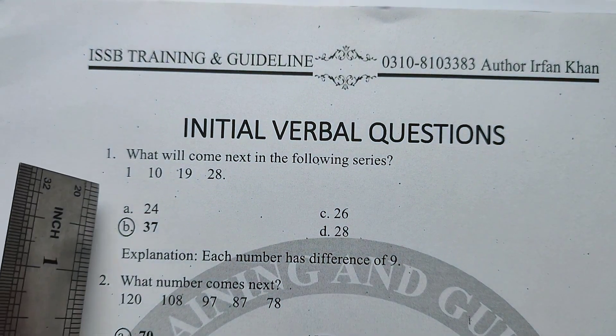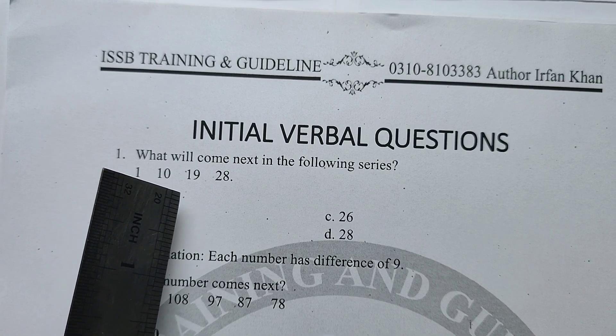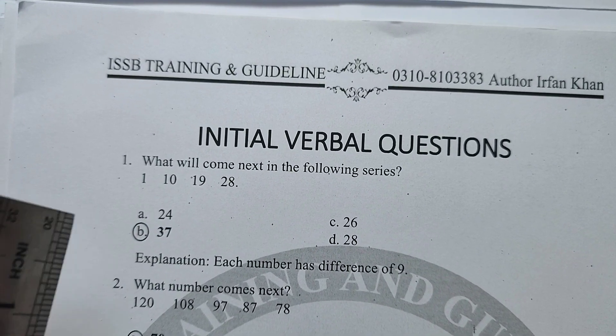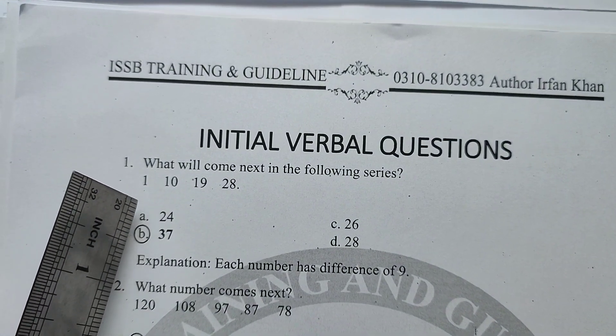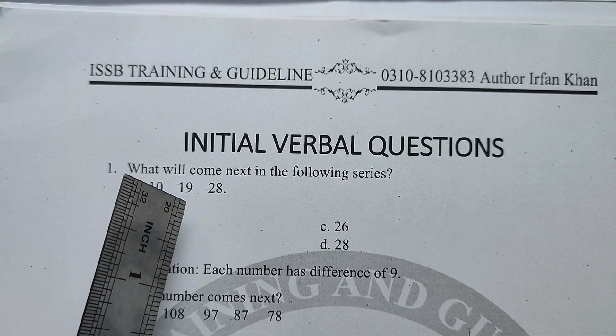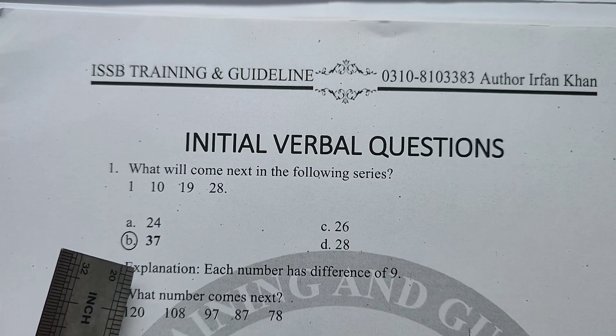Verbal question number 1: these are series questions. The series is 1, 10, 19, 28... You can see the options below. The difference between 1 and 10 is 9, and between 10 and 19 is also 9. This is ascending order with a difference of 9. So if you add 9 to 19 you get 28, add 9 again you get 37.